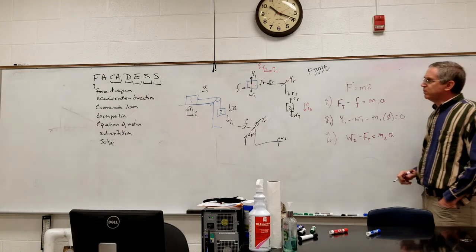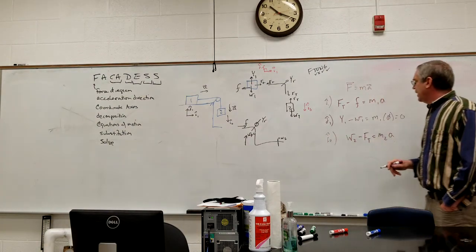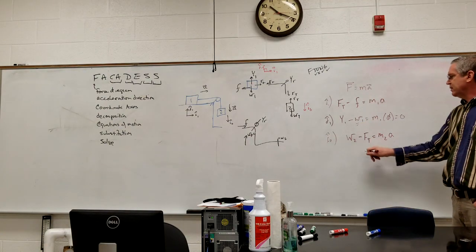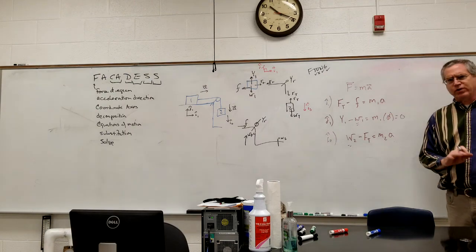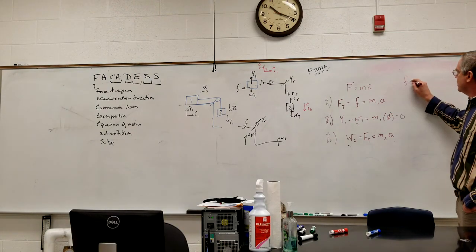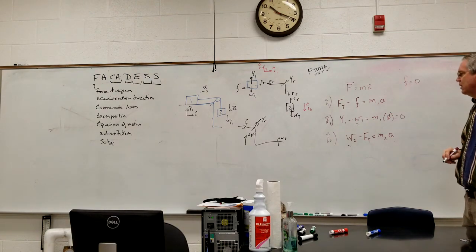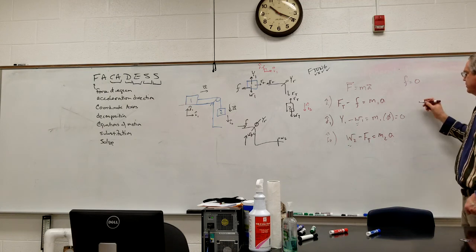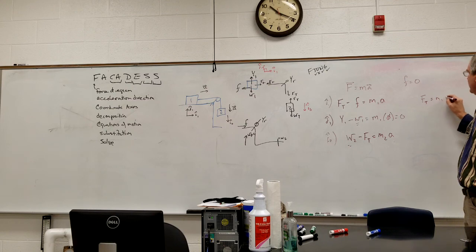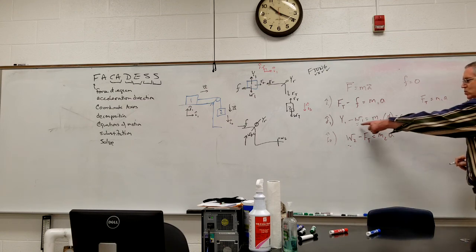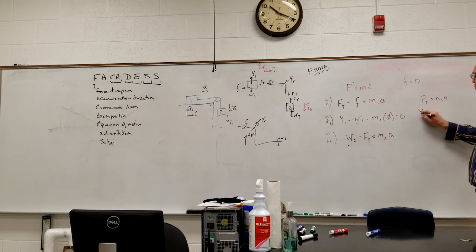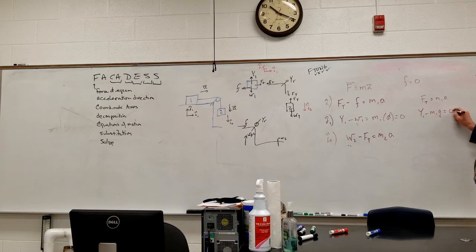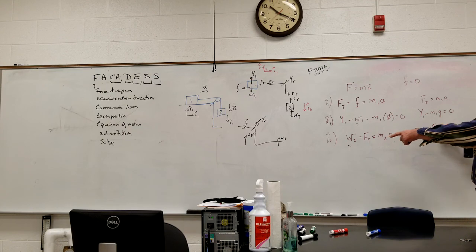If I'm solving, substitution, I have an equation for weight. There's also an equation for friction, but for right now, let's assume that the friction is zero. In other words, frictionless, and so I can now take this to FT is equal to M one A. I'm going to go ahead and make the substitution here for my formula for weight. So, I have Y one minus M one G equals zero, and then M two G minus tension is equal to M two A.